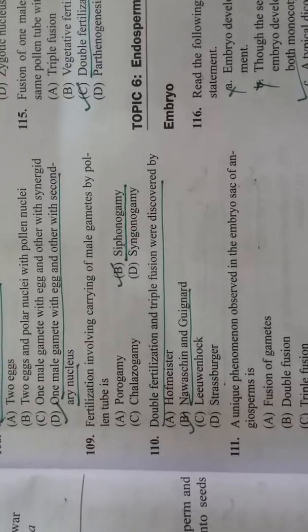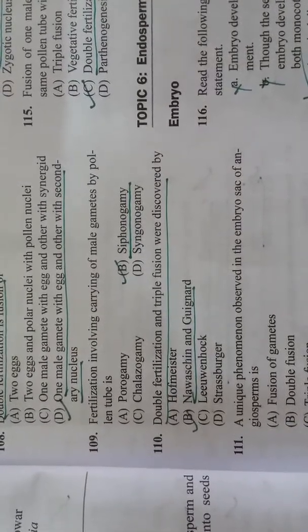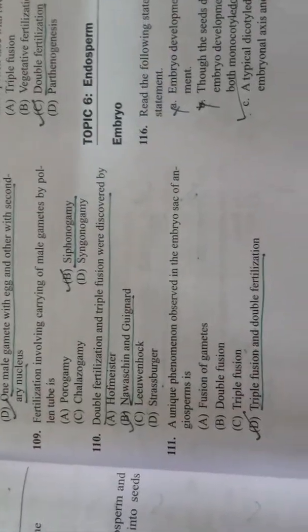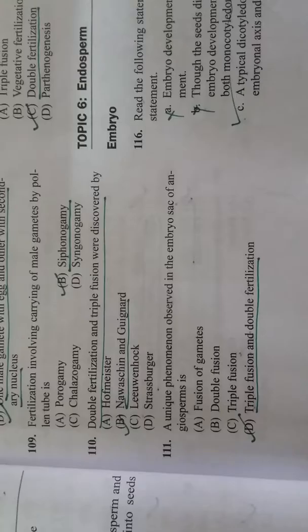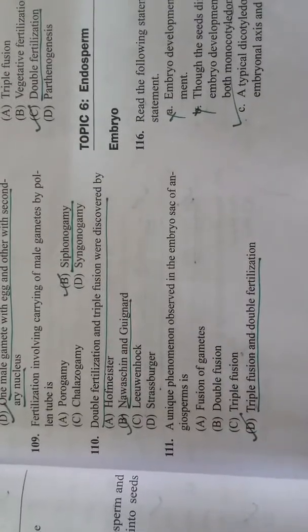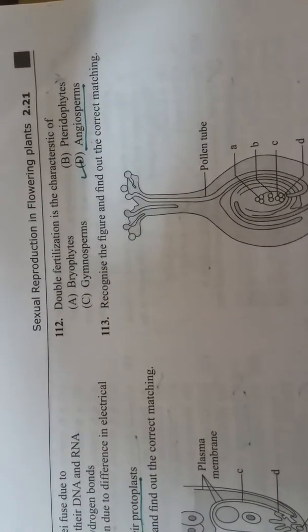Siphonogamy, double fertilization, and triple fusions were discovered by Nawaschin and Guignard. A unique phenomenon observed in the embryo sac of angiosperms. Double fertilization is the characteristic of angiosperms.